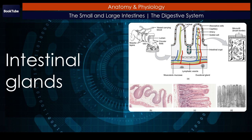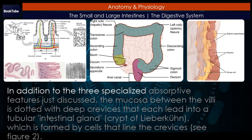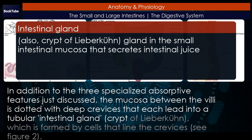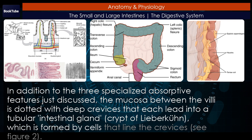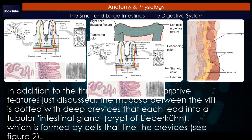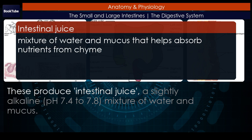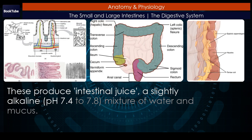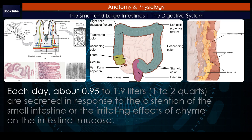Intestinal glands. In addition to the three specialized absorptive features, the mucosa between the villi is dotted with deep crevices that each lead into a tubular intestinal gland (crypt of Lieberkühn), which is formed by cells that line the crevices. These produce intestinal juice — a slightly alkaline (pH 7.4 to 7.8) mixture of water and mucus. Each day, about 0.95 to 1.9 liters (1 to 2 quarts) are secreted in response to the distention of the small intestine or the irritating effects of chyme on the intestinal mucosa.